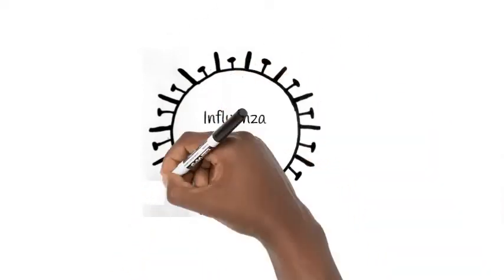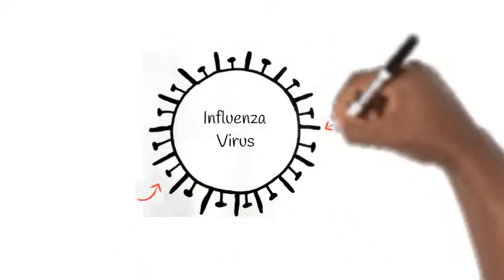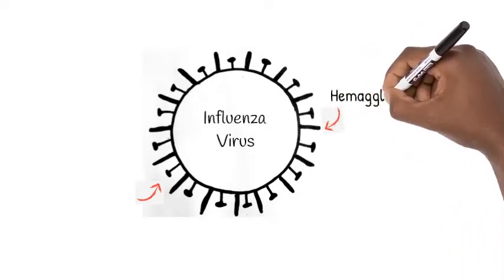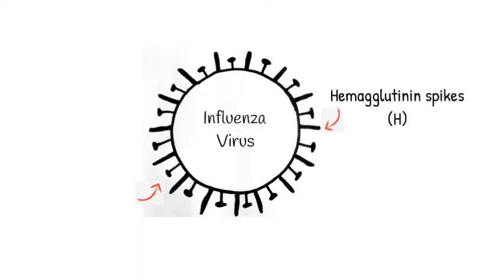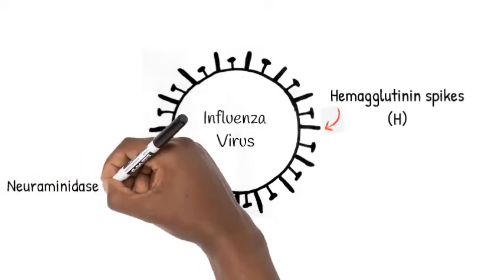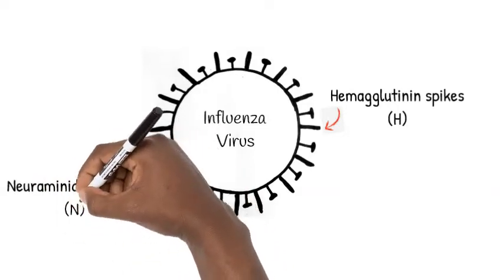At the tips of these H spikes are structures that allow the virus to attach and enter a cell. At the tips of the N spikes are structures that allow the virus to detach from the cell surface during release of new virions.